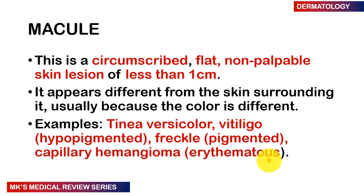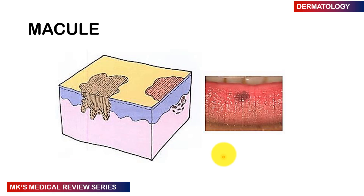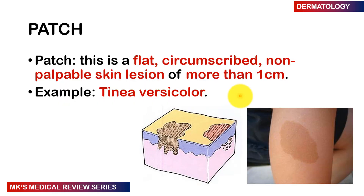A macule is a flat, non-palpable, well-circumscribed skin lesion less than one centimeter. If you were to brush your hand against it, you wouldn't feel anything — it's completely flat. It has a different appearance from surrounding skin; it may be hyperpigmented or hypopigmented. Examples include tinea versicolor, vitiligo (hypopigmented macules), freckles (pigmented), and capillary hemangiomas (erythematous). Here's an example of a macule on a patient and a cartoon drawing.